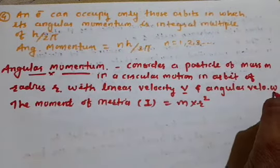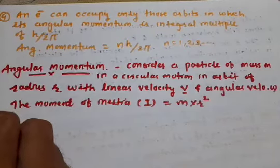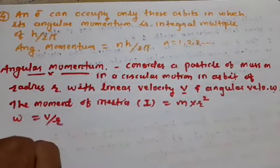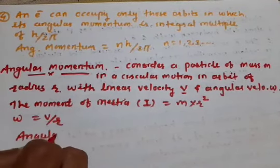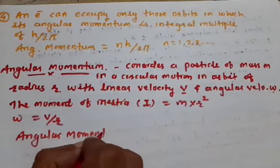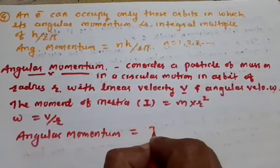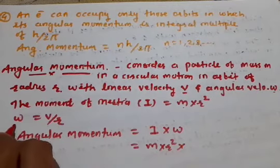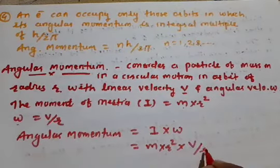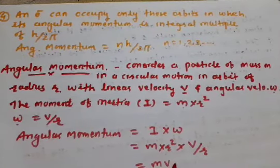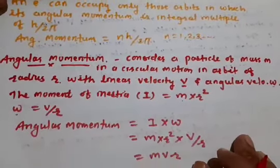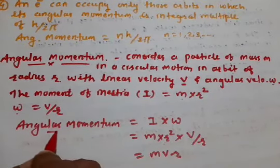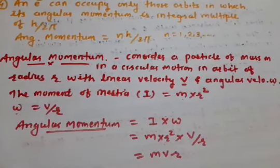Angular velocity omega equals v upon r. So, angular momentum equals I into omega equals m into r squared into v upon r. One r cancels, giving angular momentum equals m into v into r, where m is mass of electron, v is linear velocity of electron, and r is radius of circular orbit.